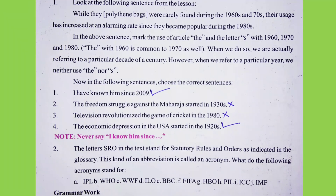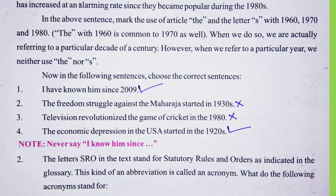Now choose the correct sentences from the following. 'I have known him since 2009' — this refers to a particular year, so it is the correct sentence. 'The freedom struggle against the Maharaja started in 1930s' — this is missing 'the', so it is incorrect. 'Television revolutionized the game of cricket in the 1980' — missing 's', so it is also wrong. 'The economic depression in the USA started in the 1920s' — both 'the' and 's' are present, so this is correct.